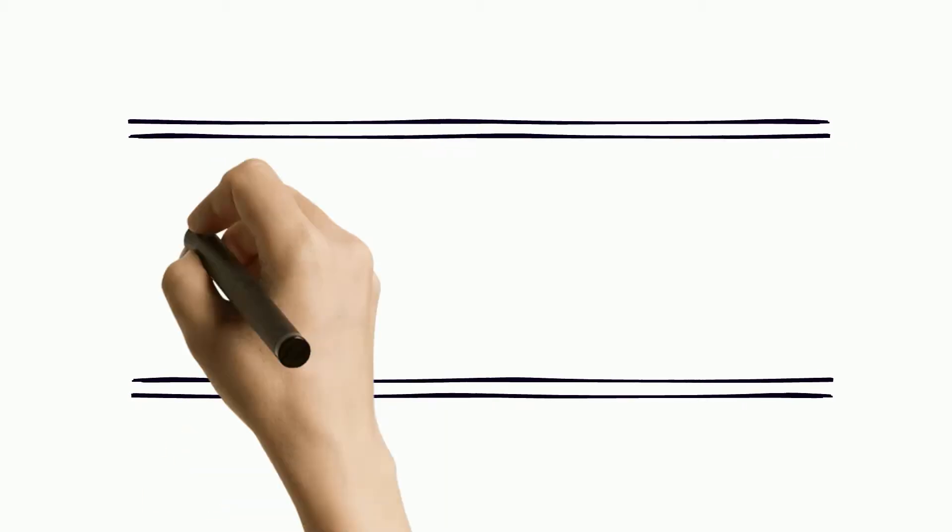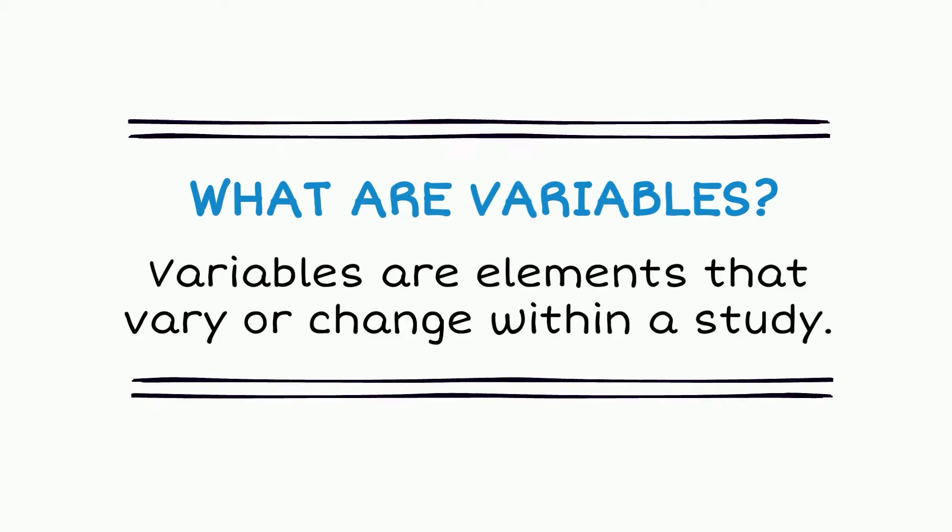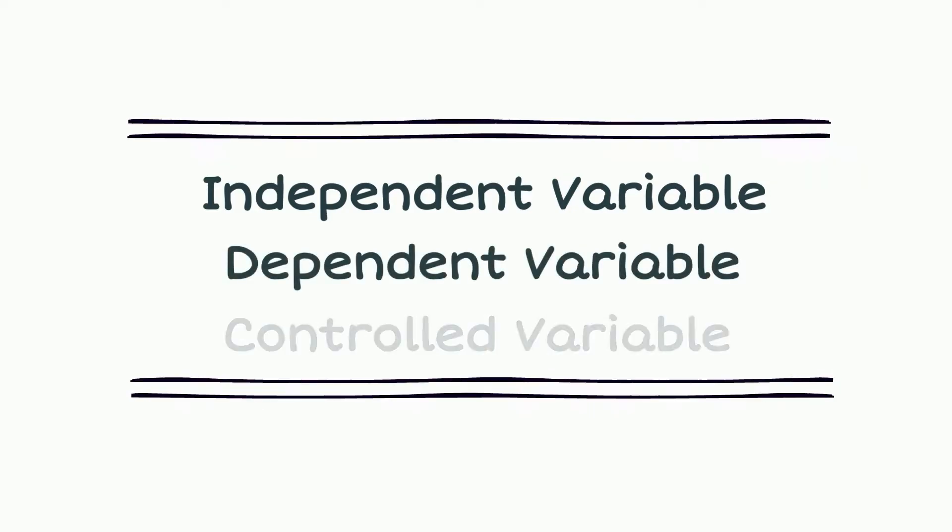But before we can write a problem statement, we have to identify our variables. Variables are elements that vary or change within a study. There are three kinds of variables: independent, dependent, and controlled.